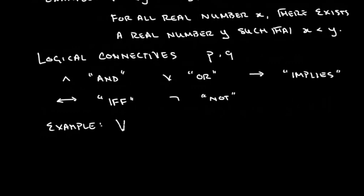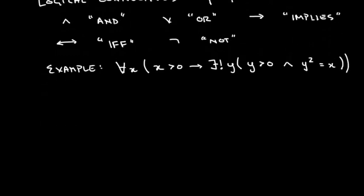We could say something like for all real number x, if x is greater than zero, then there exists a unique y such that y is greater than zero and y squared is equal to x. It's not really important to understand the mathematical meaning of the statement; we just want to understand the notation that's going on here.